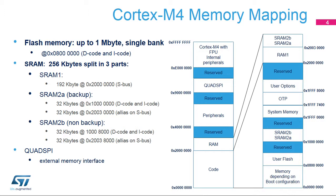SRAM2A backup RAM is 32KB, starting from address 0x10000000, and also aliased at address 0x20000000, followed by SRAM2B non-backup, which is also 32KB, starting from address 0x10008000, and aliased at address 0x20000000. SRAM1 is located in the usual ARM memory space for RAM on the S-Bus, while SRAM2A and SRAM2B can also be directly accessed through data code and instruction code buses, allowing zero wait states used for code execution.